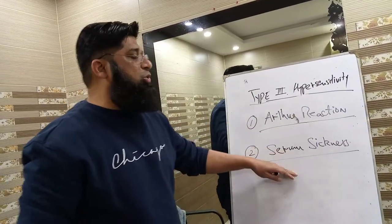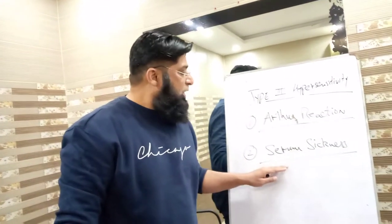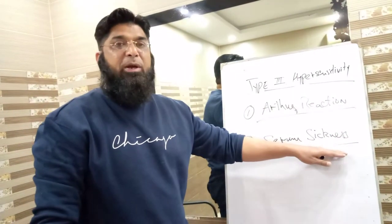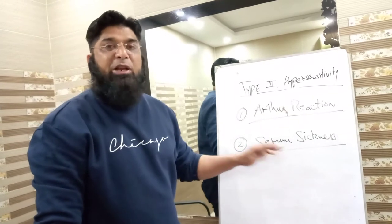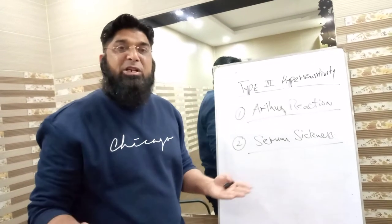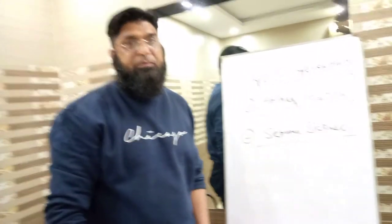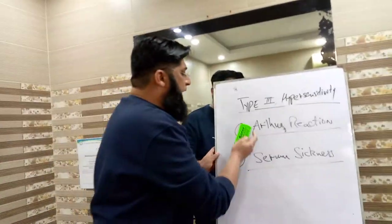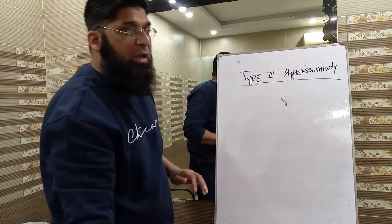The second mechanism is serum sickness. These are actually two presentable forms of type 3 hypersensitivity. Serum sickness means generalized inflammation — chronic inflammation — which has spread on a larger scale throughout the body of the host as a result of immune complex deposits.